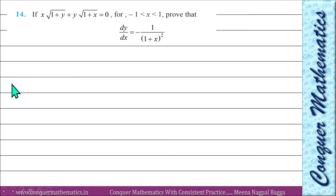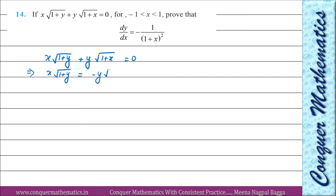Iski jo main discuss karne lagay hoon — ek short trick beta. Kaise aap change karke is question ka hal kar sakte ho? Hume given hai x√(1+y) + y√(1+x) = 0. Hum ek term left mein hi rehne dete hain, doosri term right mein transpose karte hain. Dono taraf square root exist kar rahe hain, toh hum dono taraf square kar denge.